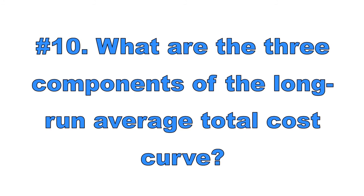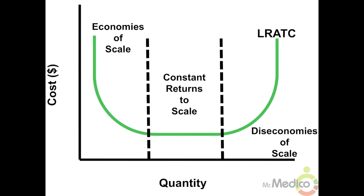Number ten: what are the three components of the long run average total cost curve? The long run average total cost curve contains three parts: economies of scale, constant returns to scale, and diseconomies of scale. Economies of scale occur when long run average total costs decrease as output increases, because the firm is specializing its productive resources efficiently. Large firms with many resources and advanced technology experience economies of scale over a larger range of output. The point where the long run ATC curve reaches its minimum is known as minimum efficient scale. Constant returns to scale exist when long run average total costs stay the same as output increases. Diseconomies of scale occur when long run average total costs increase as output increases, as expanding firms experience inefficiencies during production.